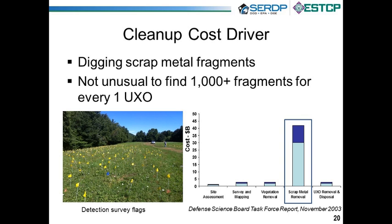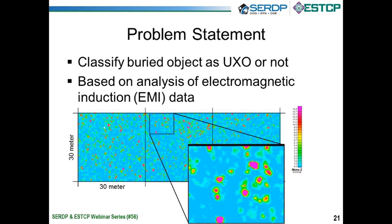The presence of lots of fragments — which are really non-hazardous scrap metal — presents a problem for us. It is not unusual to find 1,000 or more pieces of fragment or non-targets of interest for each UXO, or target of interest. The graph on the right shows the projected cleanup costs determined by the Defense Science Board in 2003, broken down by task, illustrating that the removal of scrap metal is the primary cost driver. Mitigating these costs is one of the objectives of classification.